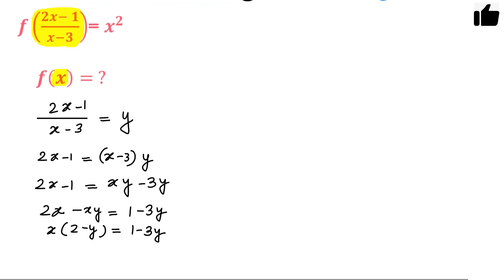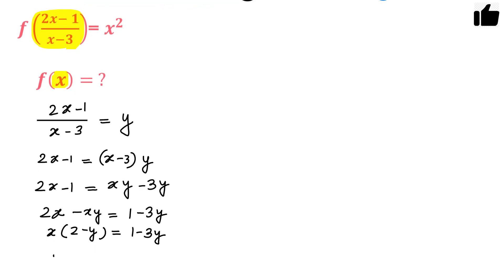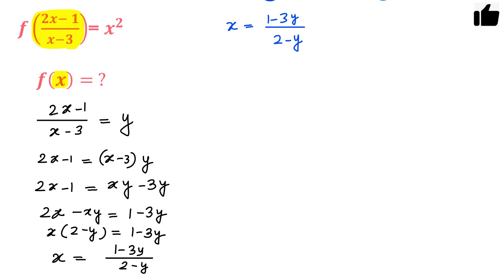So the result is x equals (1 minus 3y) divided by (2 minus y). Now going back to the original equation, f of (2x minus 1)/(x minus 3) equals x squared, and since the entire argument equals y, we can write f(y) equals x squared.